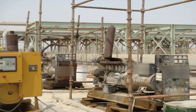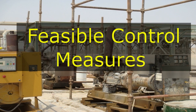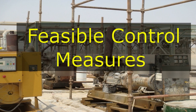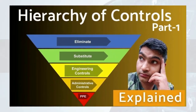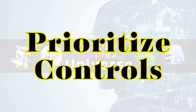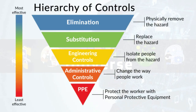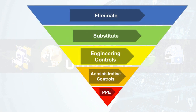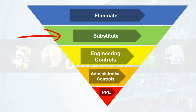Now you are tasked to determine feasible control measures using the hierarchy of control. Step 2: Prioritize Controls. It's time to determine the feasible controls and prioritize them based on the hierarchy of controls structure. Remember from the previous video: start determining feasible controls from the top of the hierarchy — eliminate or substitute first, if possible.